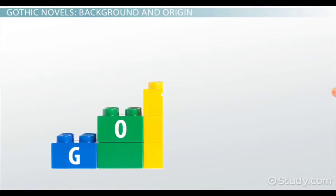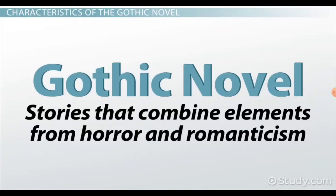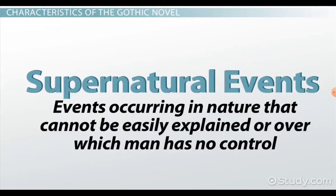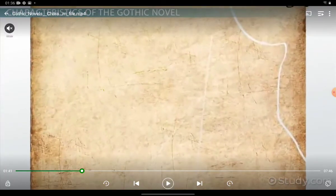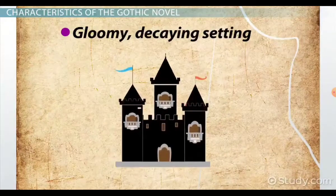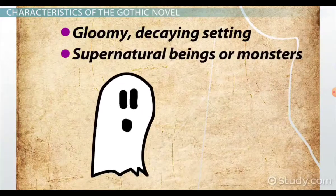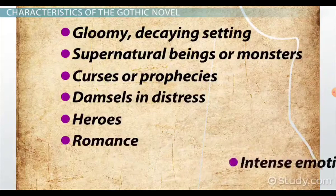The term 'gothic novel' broadly refers to stories that combine elements of horror and romanticism. The gothic novel often deals with supernatural events or events in nature that cannot be easily explained or controlled by man, and it typically follows a plot of suspense and mystery. Common elements found in gothic novels include: gloomy decaying settings, haunted houses or castles with secret passages and trapdoors, supernatural beings or monsters such as ghosts, vampires, zombies, and giants, as well as curses, prophecies, damsels in distress, heroes, romance, and intense emotions.